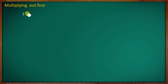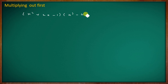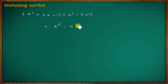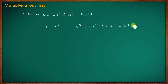Now we verify by multiplying out first. The function (x² + 2x − 1)(x³ − 4x²) expands to: x⁵ − 4x⁴ + 2x⁴ − 8x³ − x³ + 4x².